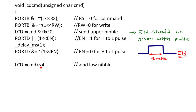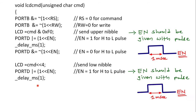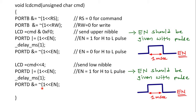Then LCD = cmd << 4 shifts the command 4 times, so 0x81 becomes 0x10, bringing the lower nibble into position. Again PORTD |= (1 << ENABLE), a delay, and PORTD &= ~(1 << ENABLE) generates another enable pulse, writing the lower nibble. The full command 0x81 is now executed, which moves the cursor to the second position of the first row.